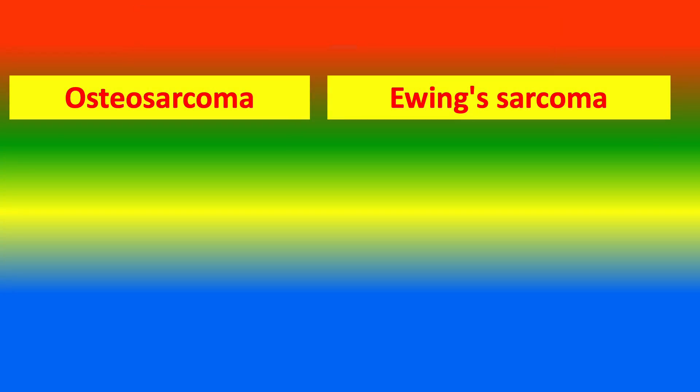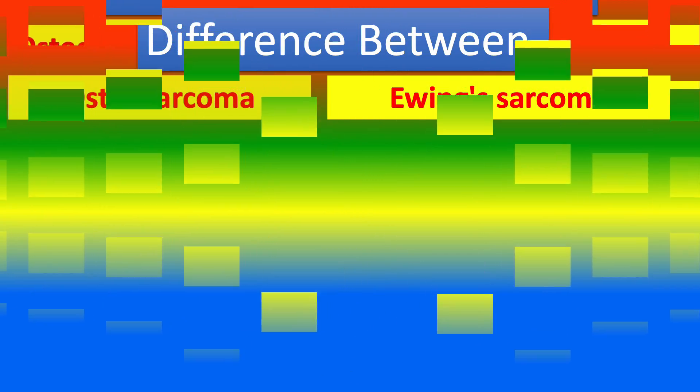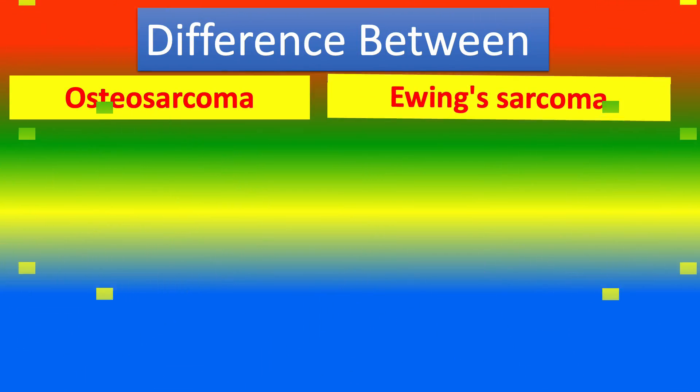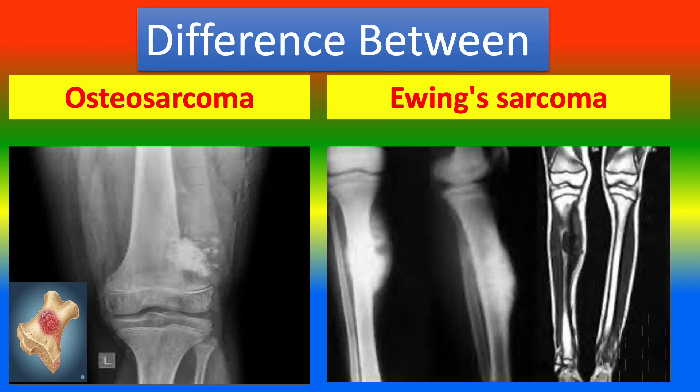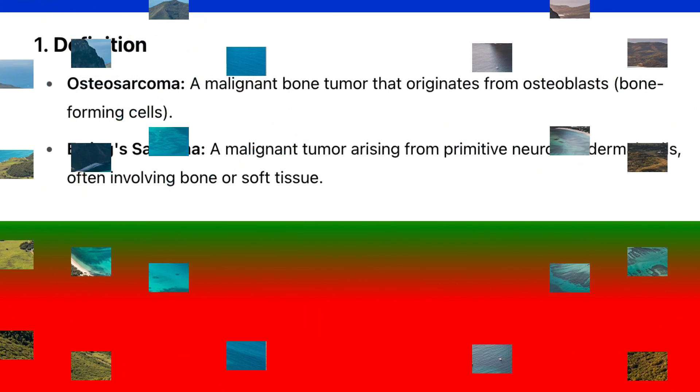Here are 15 key differences between osteosarcoma and Ewing's sarcoma, presented with clear headings.